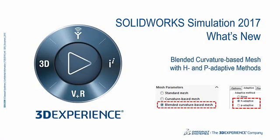In SOLIDWORKS Simulation 2017, you can now use the blended curvature-based mesher with both H and P adaptive methods, efficiently leading to more accurate results. Let's discuss this in more detail.